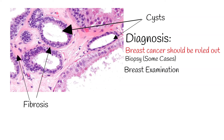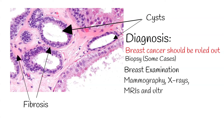Imaging studies have an important role in the diagnosis of breast diseases. Mammography, X-rays, MRIs, and ultrasound studies are used. Mammography is usually the first imaging test ordered when unusual breast changes are found during a clinical breast examination.